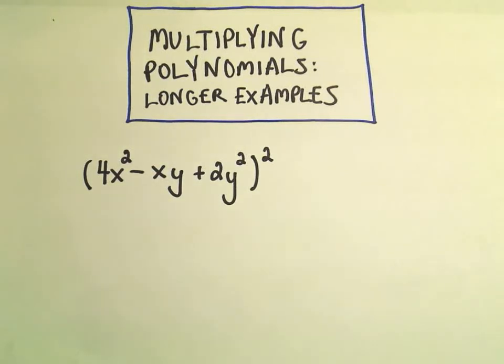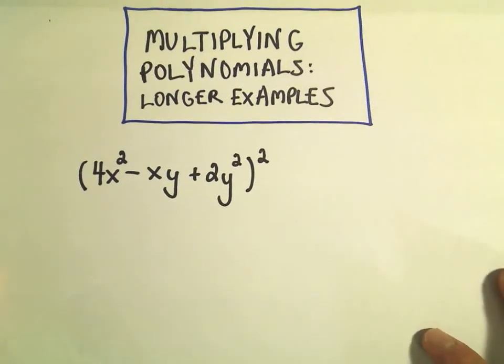Alright, in this example, I'm going to multiply a polynomial in two variables. Notice we have both x and y, so certainly that'll make the bookkeeping a little more tedious, but again, it's nothing hopefully too terrible.